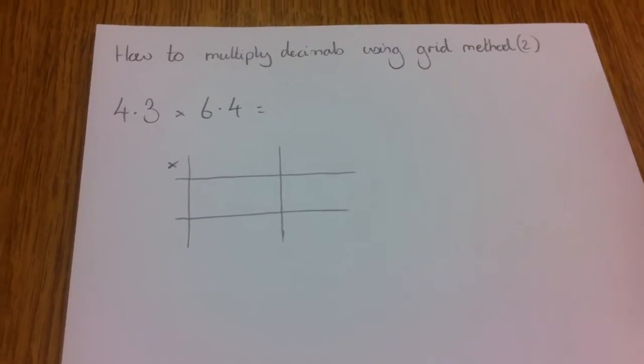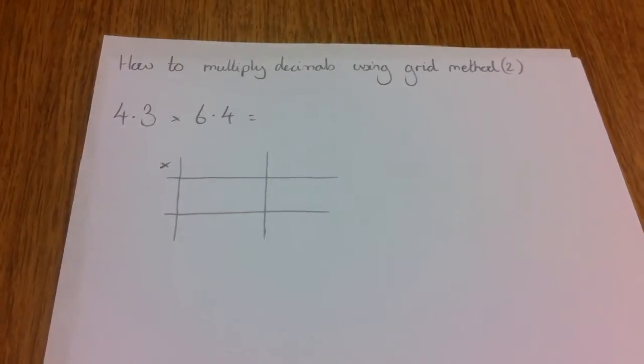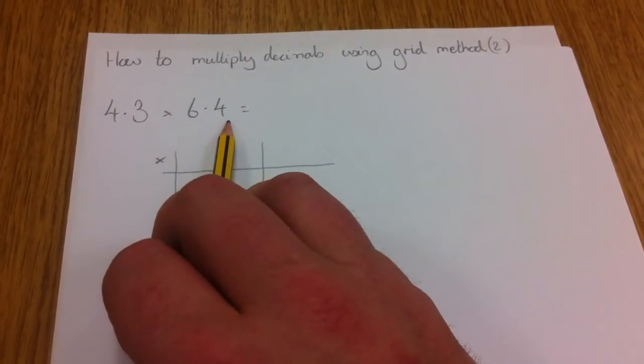To multiply some more decimals using the grid method, this time we've got two decimal numbers instead of one.